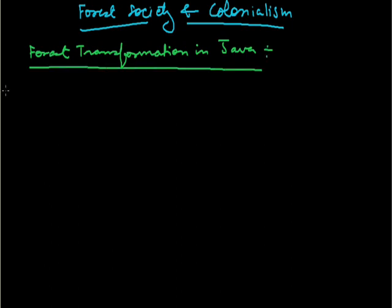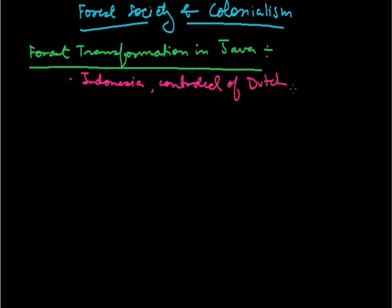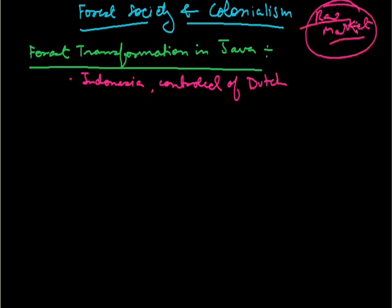The forest transformation in Java. Java island is in Indonesia. It was controlled by or was a colony of the Dutch, which means Holland and the Netherlands. Like the British, they wanted timber — the same as in India where the British came for raw materials and markets. Similarly, the Dutch also came for these two things: they wanted timber from Java to build ships.